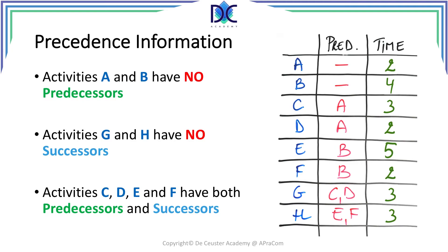The intermediate activities C, D, E, and F have both successors and predecessors.